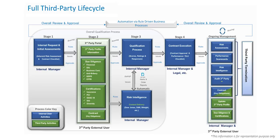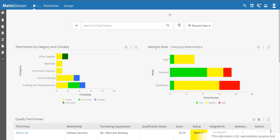You can pull intelligence from Dow Jones, BitSite, or any other third-party content providers you may be using. All this information feeds into a qualification process for your internal user to make a final determination on whether to do business with that third party. After that, work management allows scheduling of risk assessments, performance scorecards, and risk intelligence checks against Dow Jones, enabling continuous due diligence.